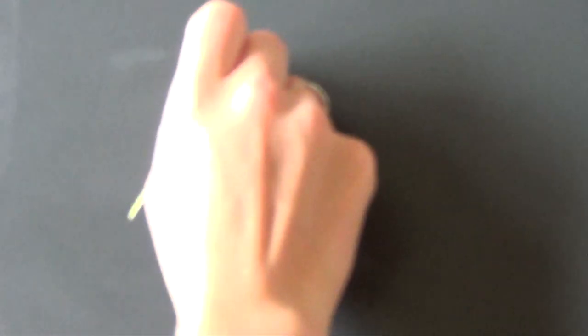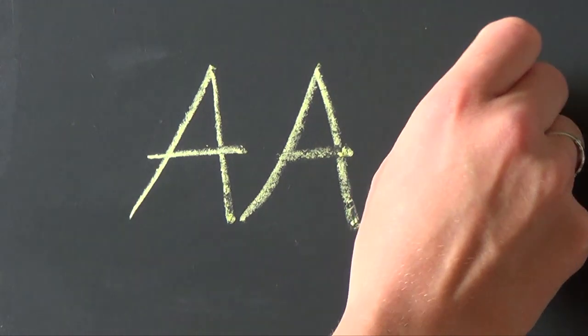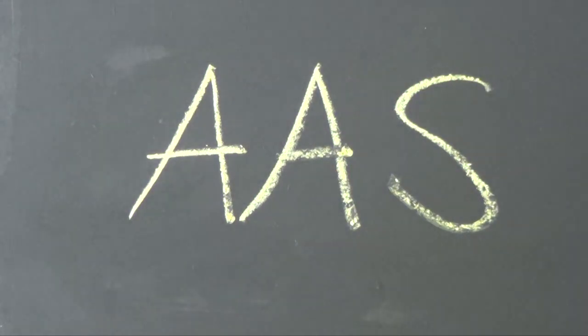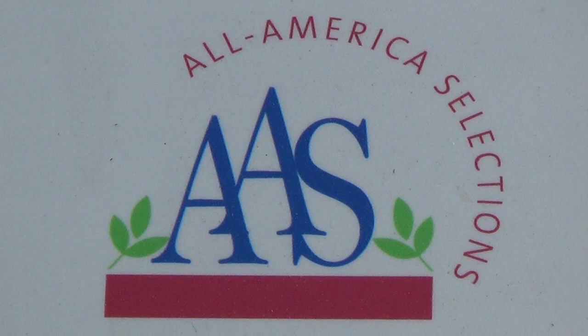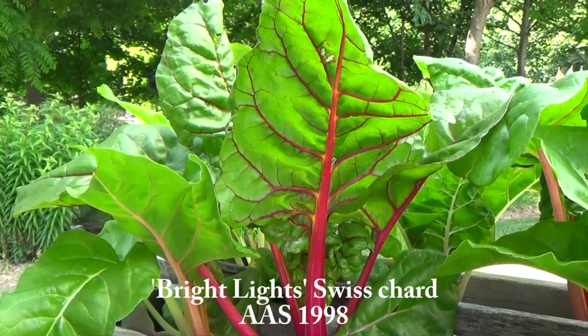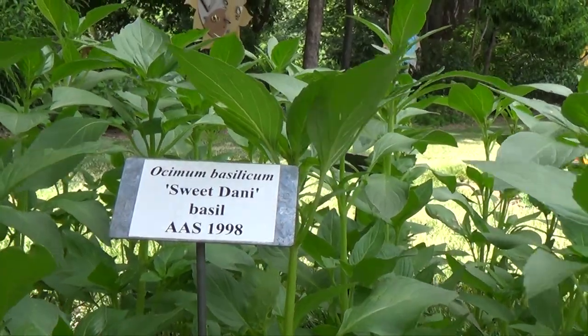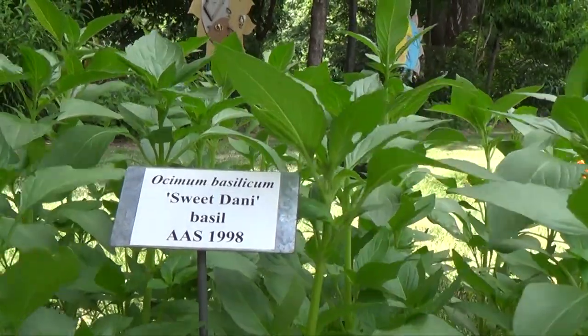If you see AAS by the cultivar name, that means the plants have been selected as an All-America Selection winner. All-America Selections is an independent group that tests plant varieties nationally and regionally. Plants that are AAS winners have been shown to perform well and have unique characteristics. So the name of the plant can contain a lot of information in just a few words.